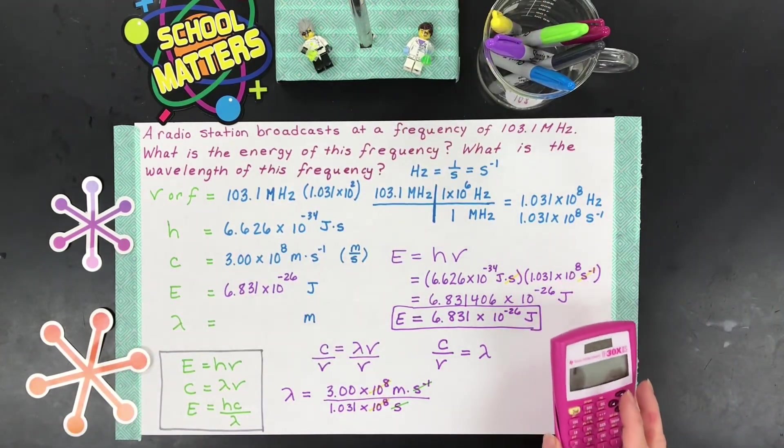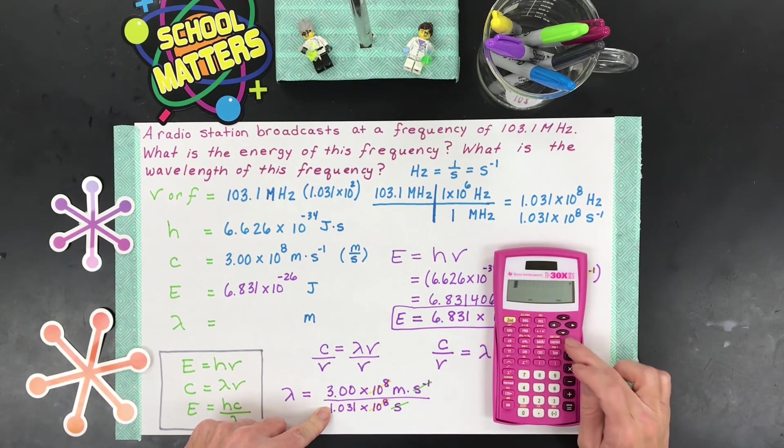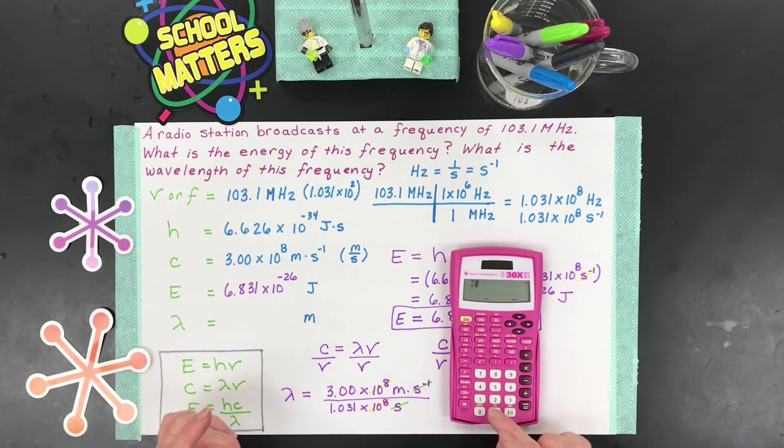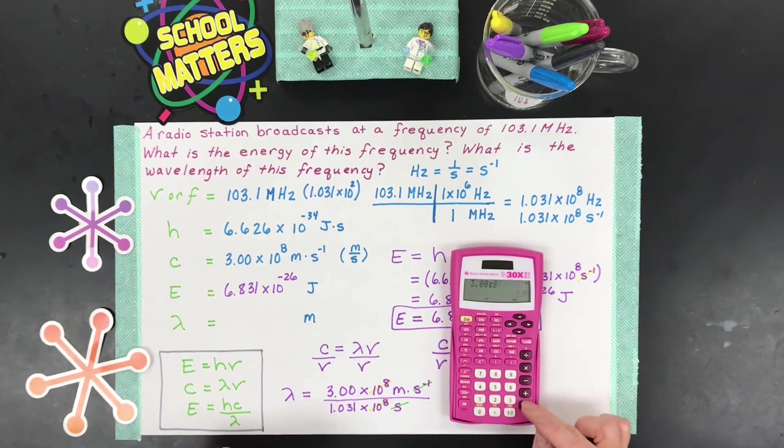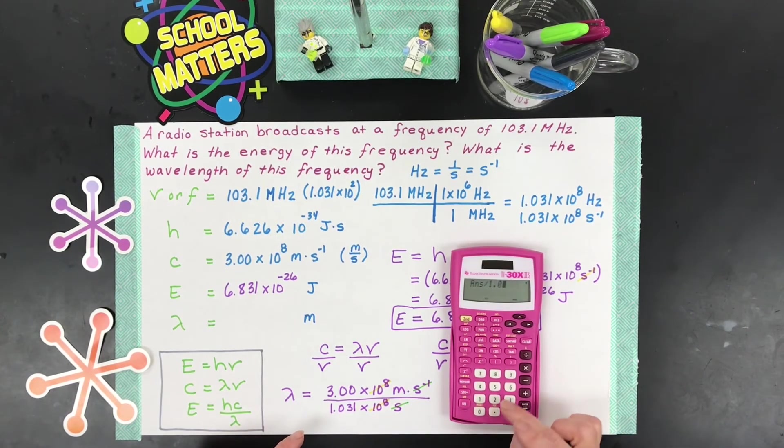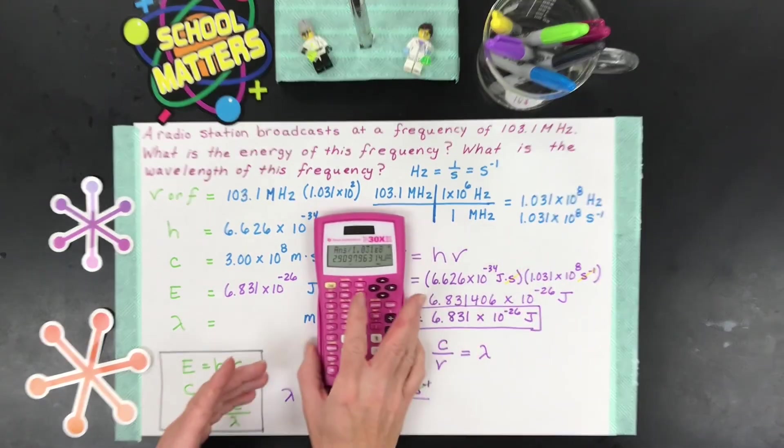I will punch this all into my calculator. But really, I just have to take 3 divided by 1.031. That's great. But I'll type the whole thing in so you get some practice. 3.00. Again, use the right key there to the 8th. And then I'm going to divide it by 1.031. Great. And then to the 8th. All right. Look at that.